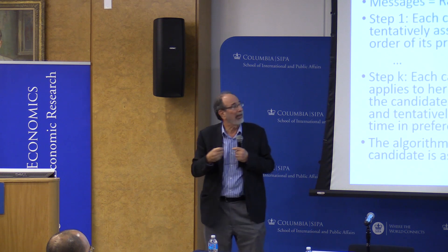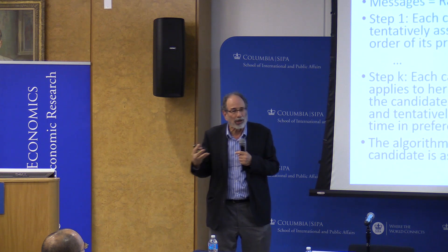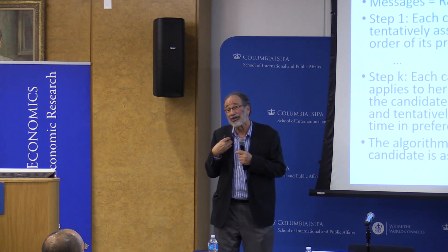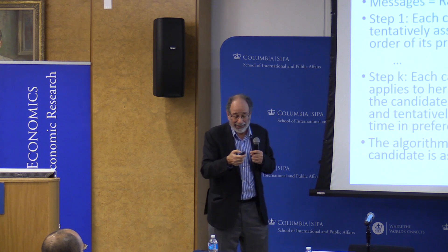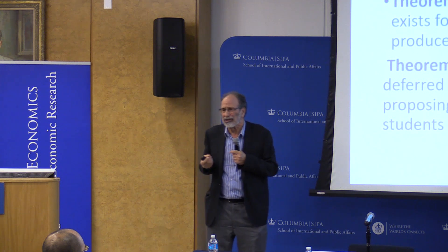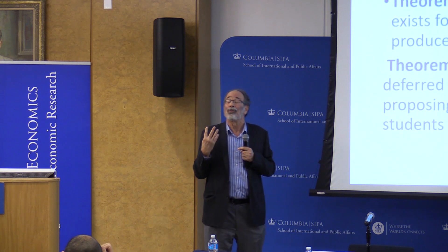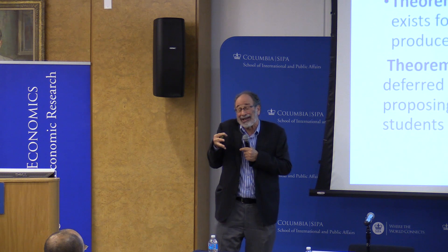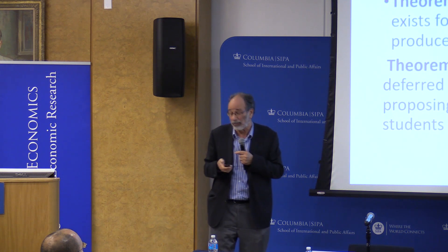Gale and Shapley proved that a stable matching exists for every marriage market, produced by the deferred acceptance algorithm. The proof is easy to see: if I'm a student matched to my third choice, I know there's no blocking pair because I already applied to my first and second choices and was rejected when they filled positions with people they preferred more than me. This is a stable matching for any set of preferences submitted. And the deferred acceptance algorithm with students proposing makes it a dominant strategy for students to state their true preferences.